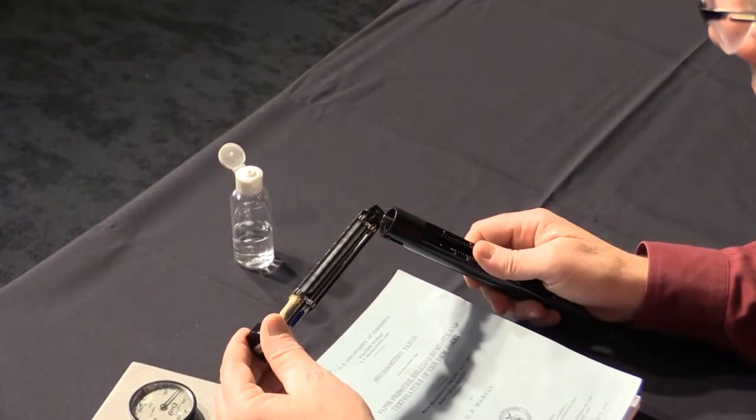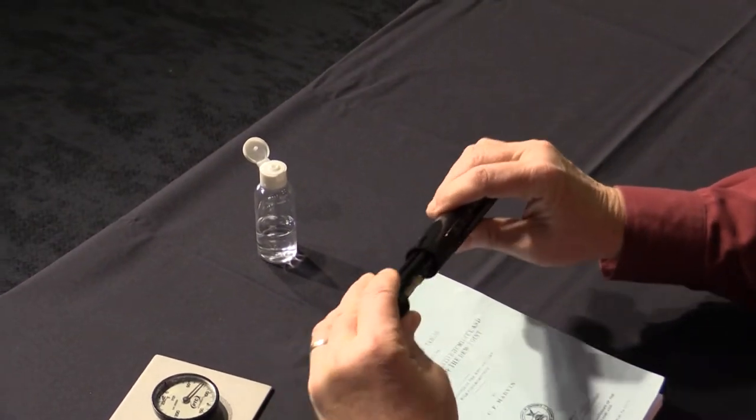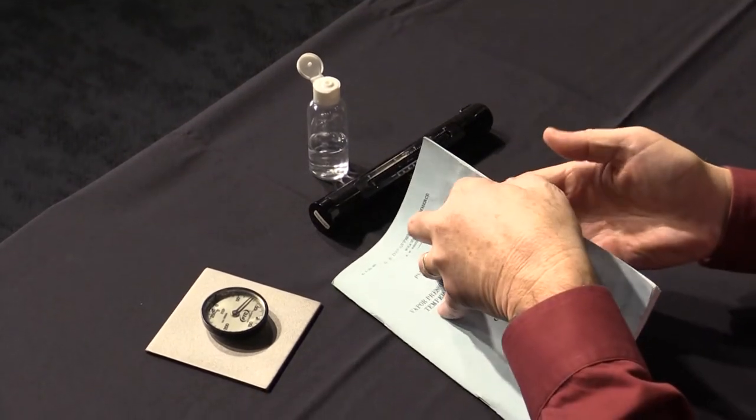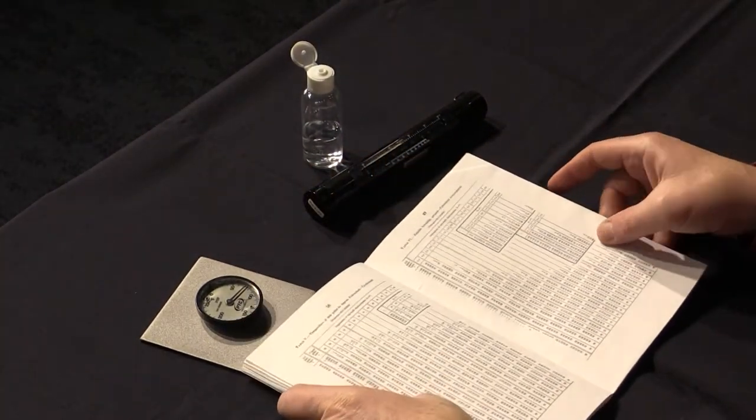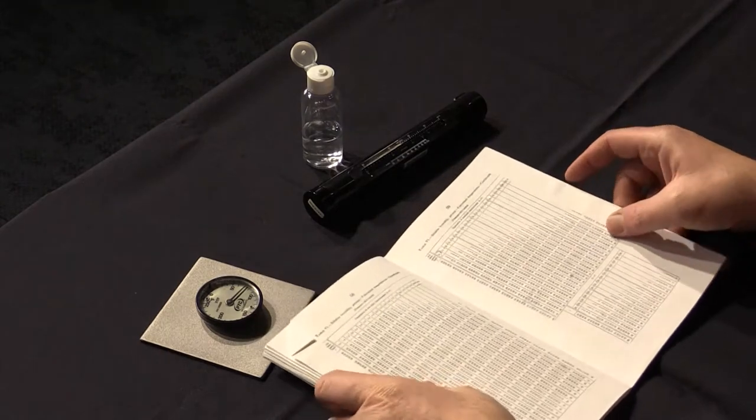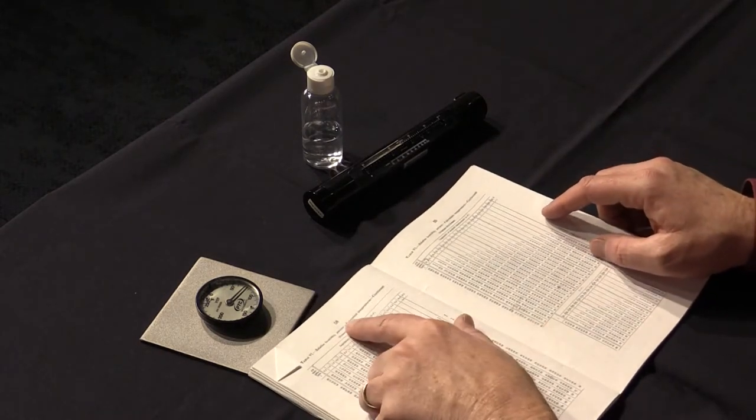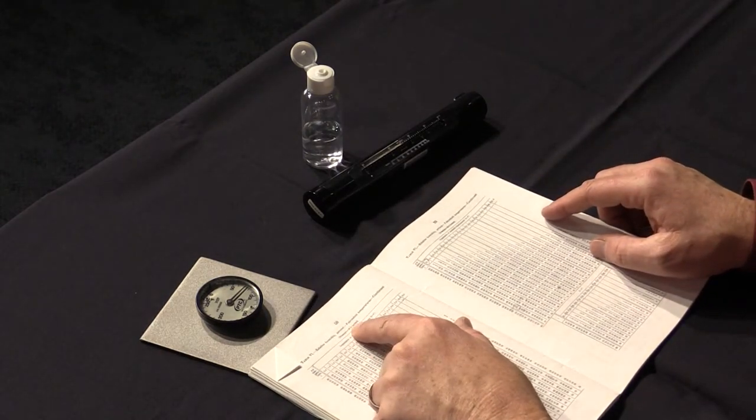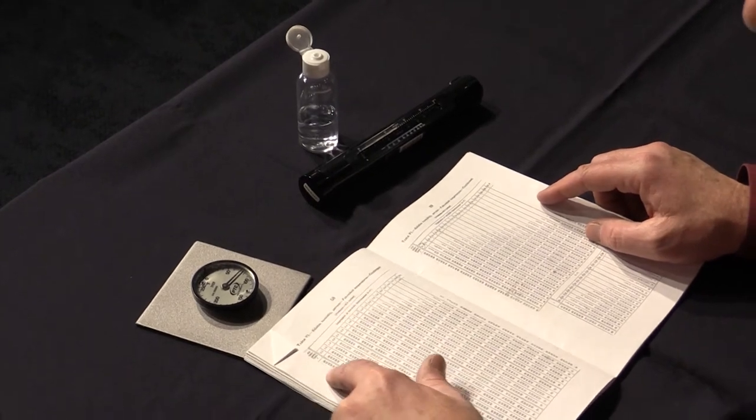Now read and record the dry bulb temperature, which is the same as the air temperature. Calculate the difference between the two temperatures. For example, a dry bulb temperature of 75 and a stable wet bulb temperature of 65 is a difference of 10 degrees.